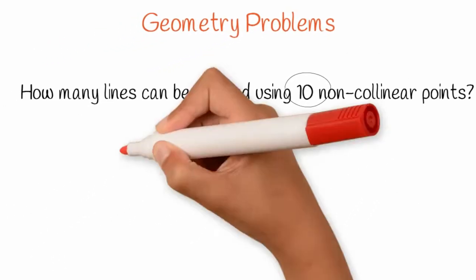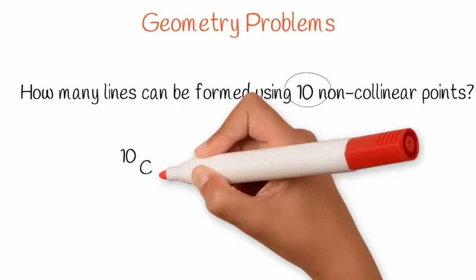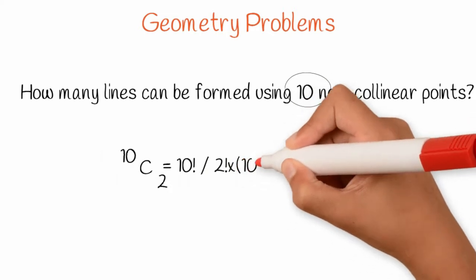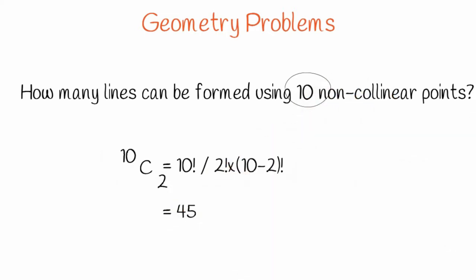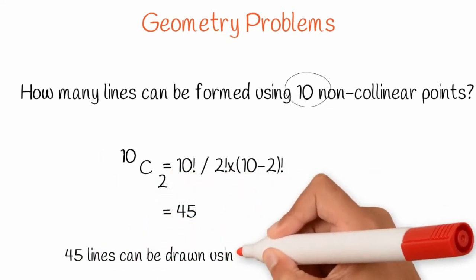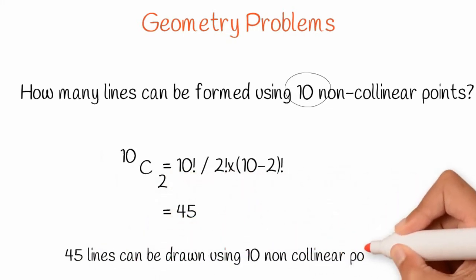It is 10C2, which is 10 factorial over 2 factorial times (10 minus 2) factorial, which is 45. So 45 lines can be formed using 10 non-collinear points.